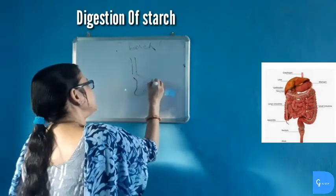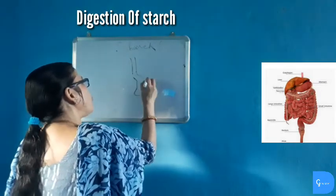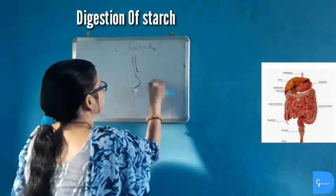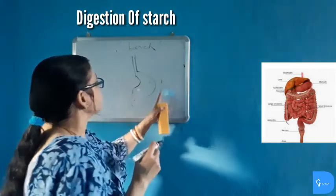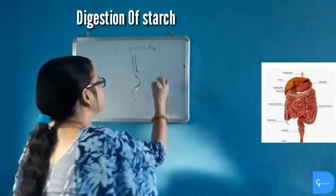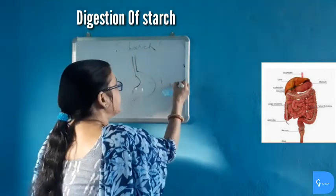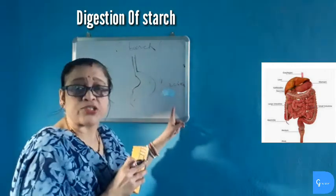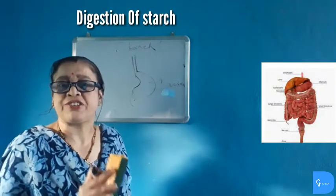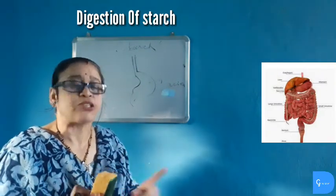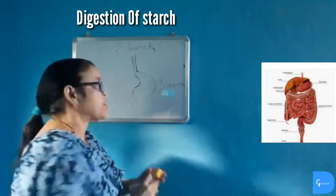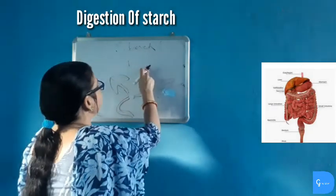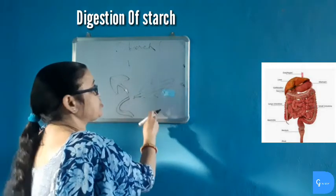In the stomach, no digestion of carbohydrate takes place. The stomach has a mucus layer which secretes hydrochloric acid and makes the food acidic in nature. In an acidic environment, carbohydrate does not digest. So remember: no carbohydrate digestion takes place in the stomach. From the stomach, the carbohydrate food reaches the duodenum, which is a part of the small intestine.